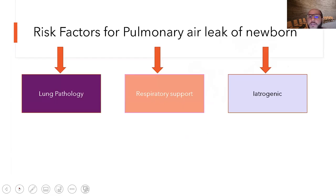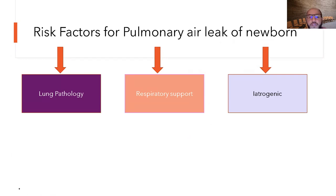The risk factors for pulmonary air leak in the newborn — whether pneumothorax, pneumomediastinum, pneumopericardium, PIE, or subcutaneous emphysema — can be categorized as lung pathology, ventilation-induced or respiratory support issues, or iatrogenic.